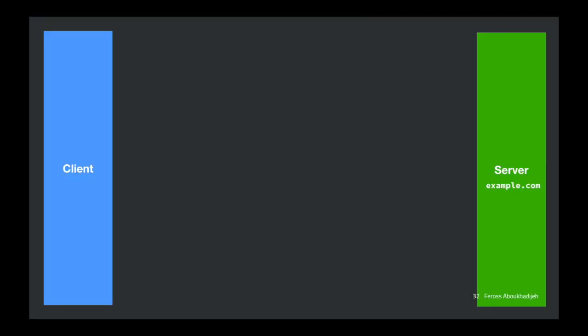We have a browser and a server. There's this notion of a cyclic group — think of it as a set of numbers. G is publicly known, defined in the standard, so everyone — browser makers, attackers, and servers — knows what G is. We can do group operations: multiply G by G-cubed and get G to the fourth. We can exponentiate group elements. The group is of size Q.